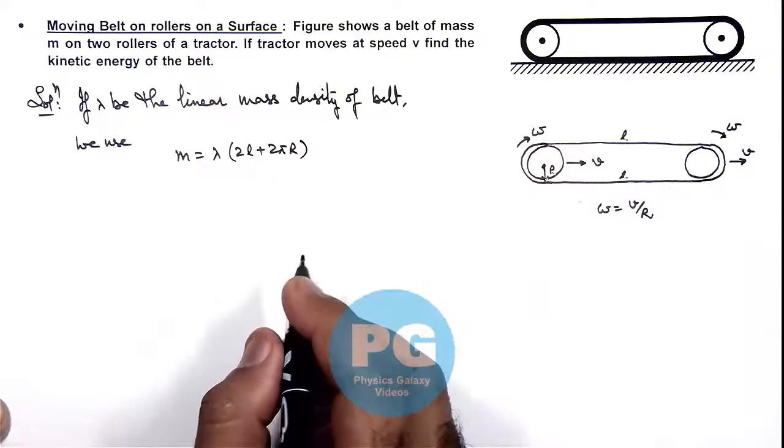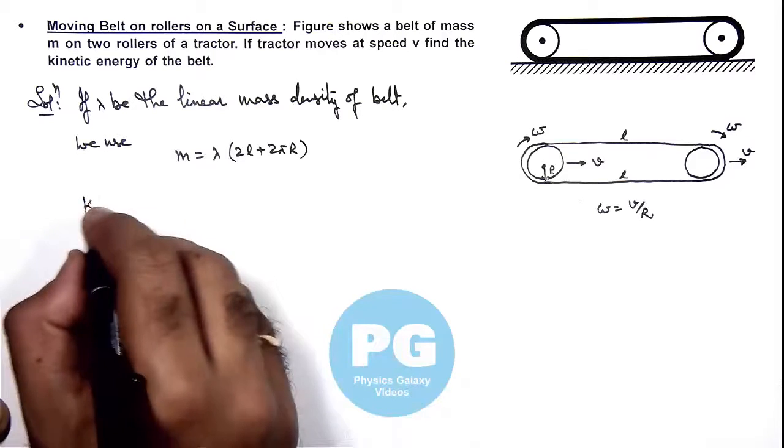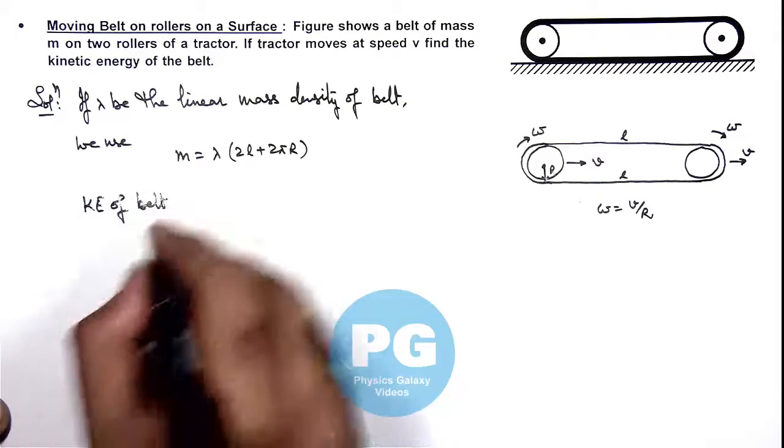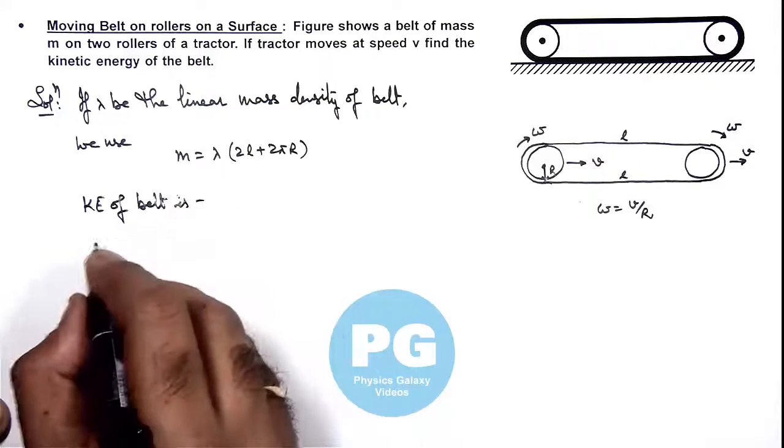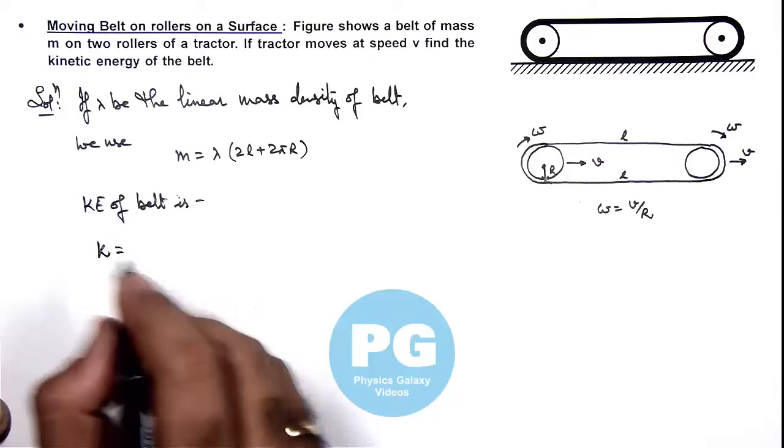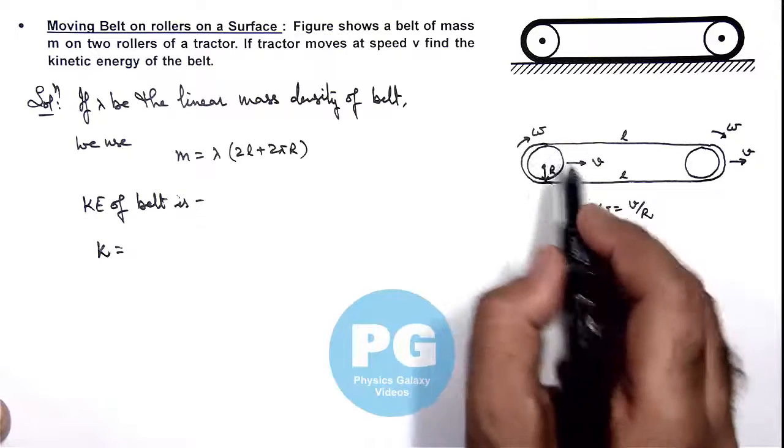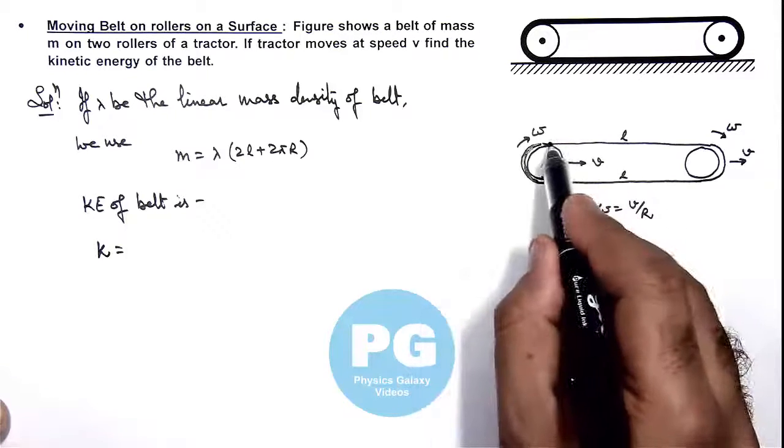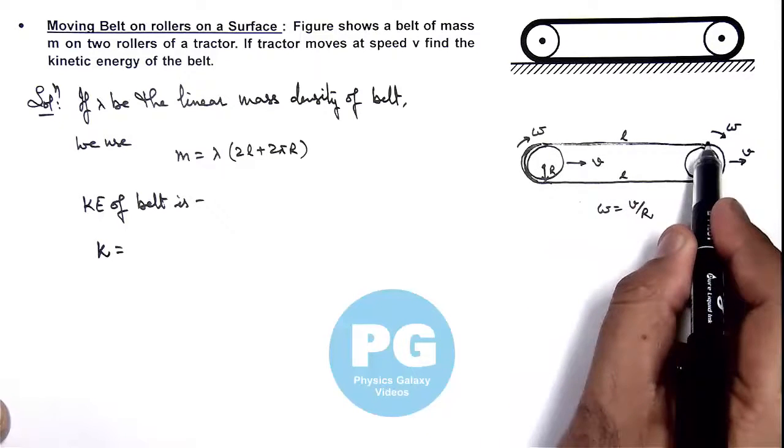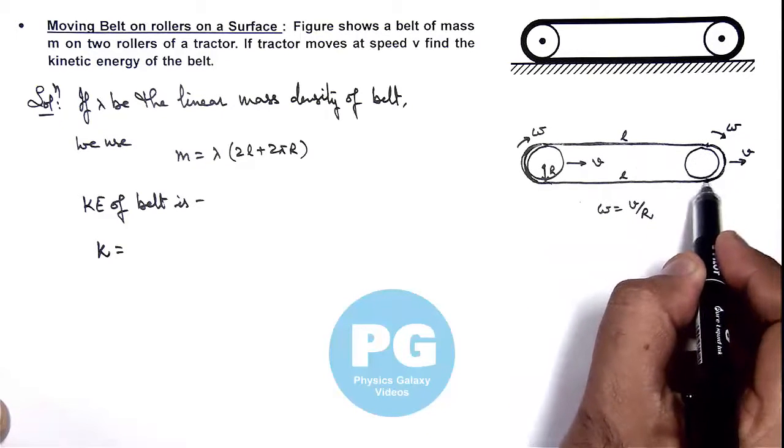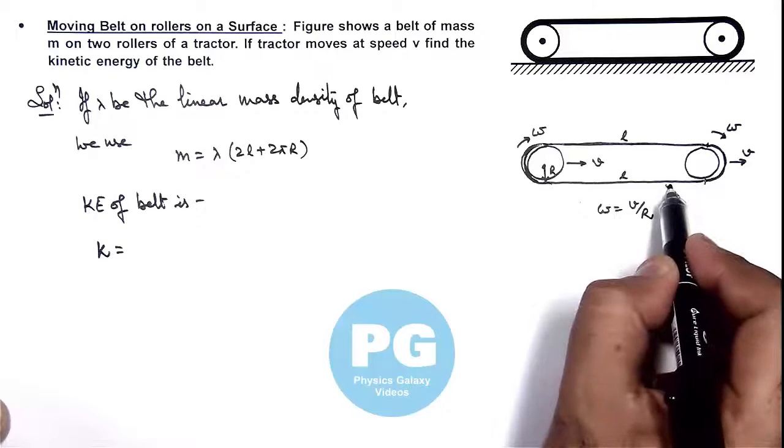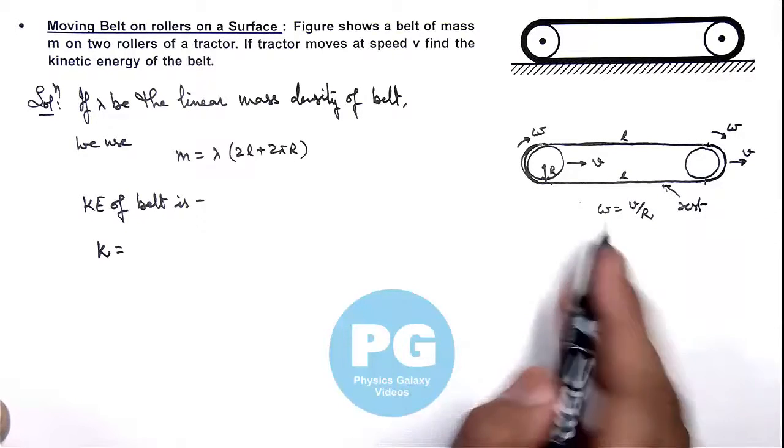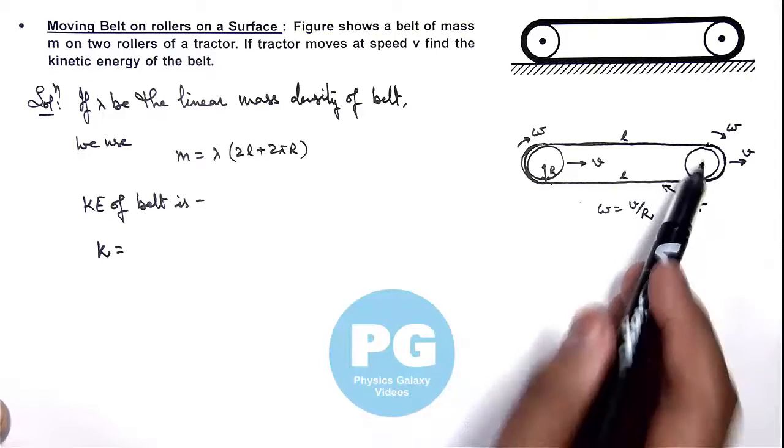Now in this situation, if we calculate the kinetic energy of the belt, then kinetic energy of the belt is given by kinetic energy of this section, kinetic energy of this straight section, and kinetic energy of again this circular section, as this bottommost section we consider to be at rest in case of pure rolling of these rollers.